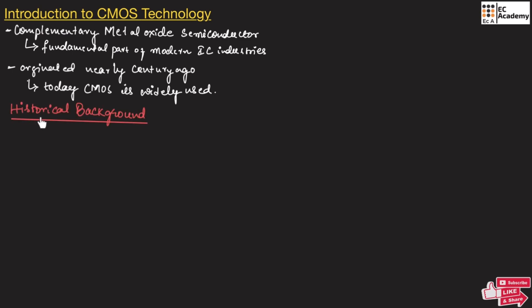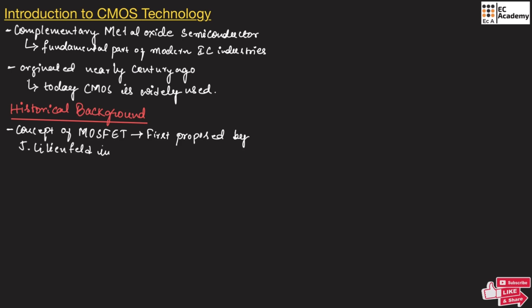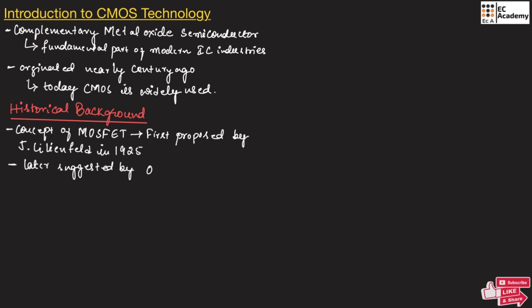Now let us understand the historical background. The concept of metal oxide semiconductor field effect transistor was first proposed by J. Lilienfield in the year 1925. Later, a similar structure was suggested by O. Hale in the year 1935.